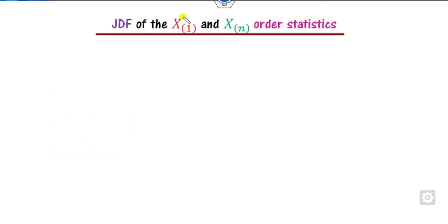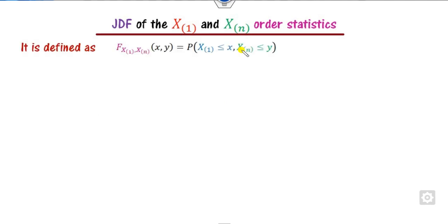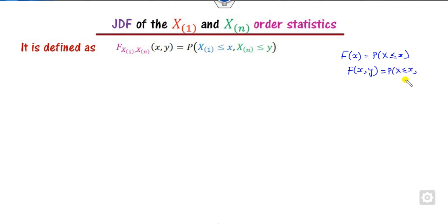Let's start with finding the joint density function of X(1) — called the minimum of the X(i)'s — and X(n) — called the maximum. What is the definition of the distribution function? For one dimension we know the CDF, and for two dimensions it is P(X ≤ x, Y ≤ y). Here we need X(1) and X(n), so we write the ordered pair accordingly.